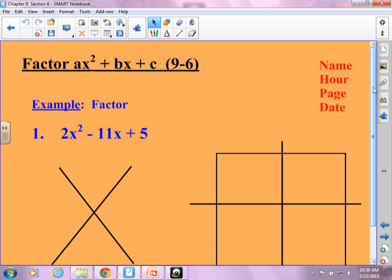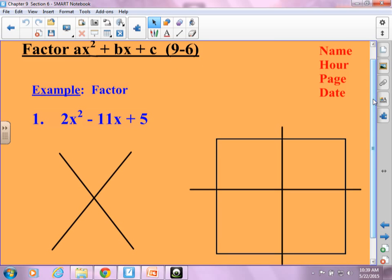We did do that in 9.5, but you'll notice there's a little bit difference in today's. You'll notice that in the 9.5, the A term was 1. Today, the A term is other than 1. So you're going to see 2, you're going to see 4, you're going to see 5, you're going to see different numbers, which will cause things to be a little bit different.